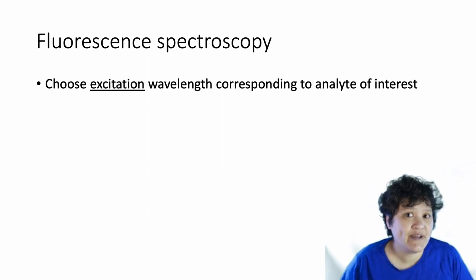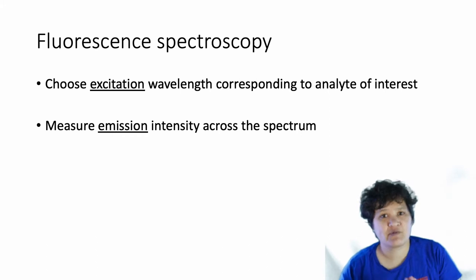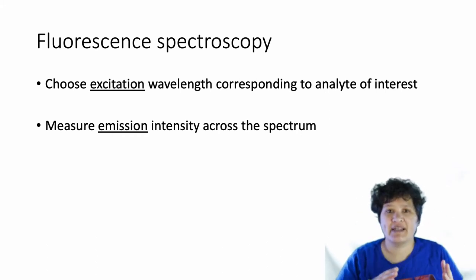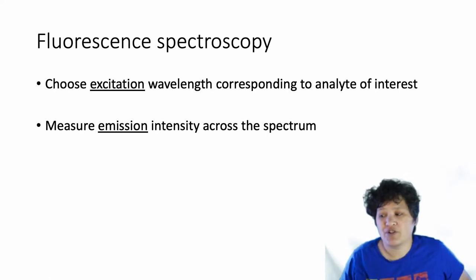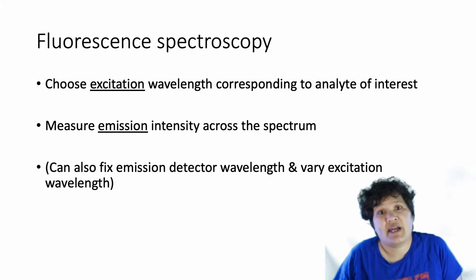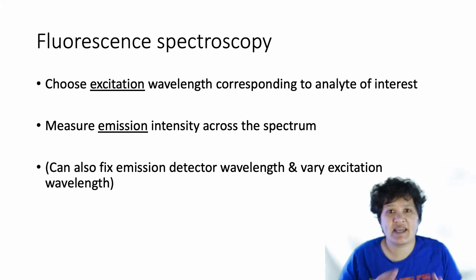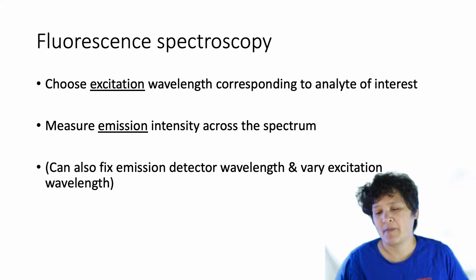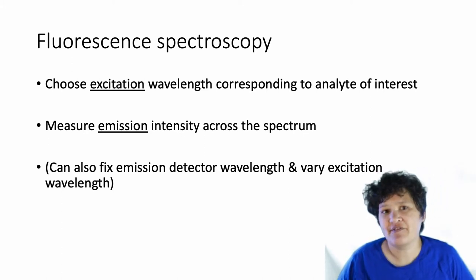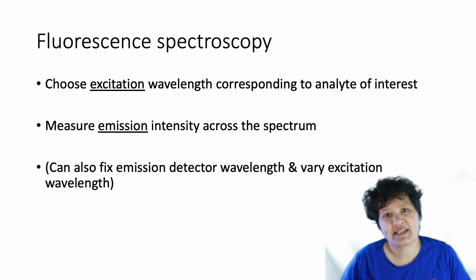How do we do fluorescent spectroscopy? First, you're going to find an excitation wavelength that works for your analyte of interest. Then you're going to scan through what's being emitted and see where you get high or low intensity emission across the spectrum. Or you could do it the other way around: fix the detector on a single wavelength using a monochromator, then change the input wavelengths and scan across to see which cause your sample to emit at a particular frequency. You may also see what we call a 3D spectrum, where both the excitation and emission wavelengths are varied.